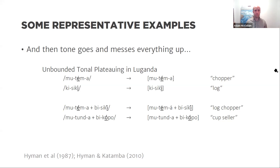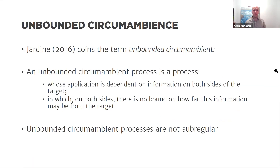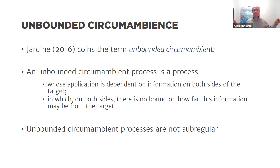Jardine (2016) coins the term 'unbounded circumambient': a process whose application depends on information on both sides of the target, with no bound on how far that information may be. Crucially for the sub-regular program, unbounded circumambient processes are not sub-regular: the realization of some element requires access to information of potentially unbounded distance in both directions, requiring a non-deterministic regular function — something fully regular in terms of its expressivity.